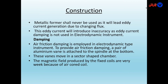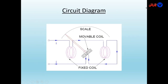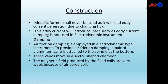A metallic former would introduce losses, and the eddy current would introduce inaccuracy since eddy current damping is not used in electrodynamic instruments. Air friction damping is employed instead. To provide air friction damping, a pair of aluminum vanes is attached to the spindle at the bottom, and these vanes move in a sector-shaped chamber.